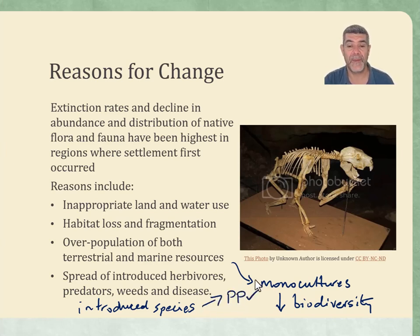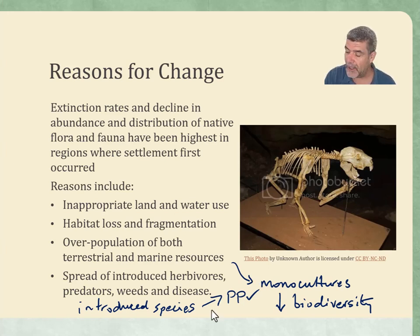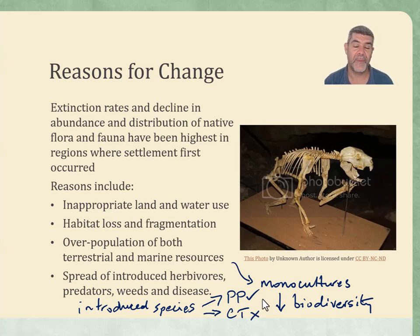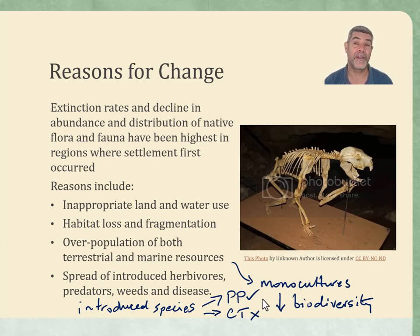The cane toads, however, get a big cross. They weren't even particularly successful at targeting the beetles they were introduced to attack in the sugarcane crops, and they've spread almost infinitely throughout our country. Their distribution continues to increase, their abundance has massively increased from the numbers originally introduced, and we cannot look back on cane toads as a successful introduction of biological control.